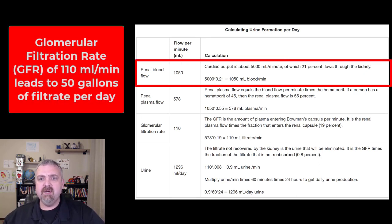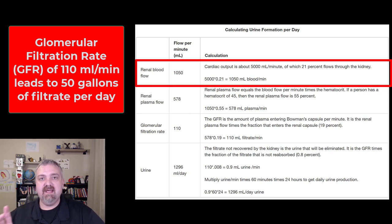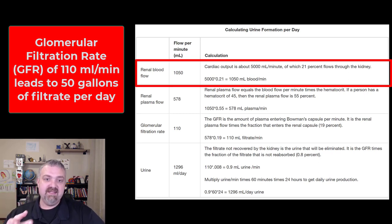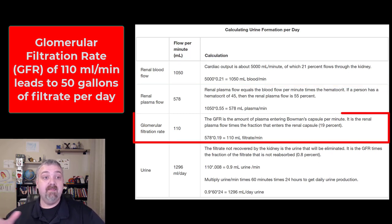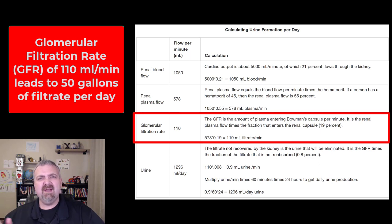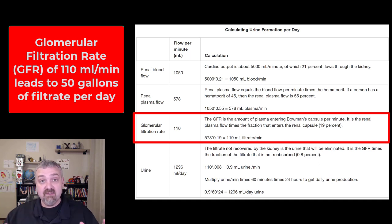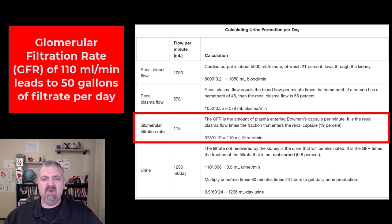Your cardiac output should be about 5 liters per minute, or 5,000 milliliters per minute, in a normal healthy person. 20 to 25% of your cardiac output goes to your kidneys. So in any given minute, if you are moving 5 liters of blood, about 1,050 milliliters of it is flowing through the kidneys. From that, a little over half becomes renal plasma flow, and the part actually traveling through the glomerulus is right at about 110 milliliters per minute — 125 milliliters per minute in men, 105 in women.